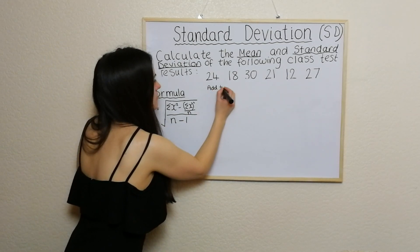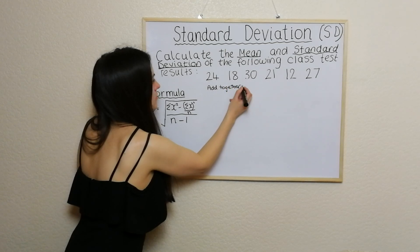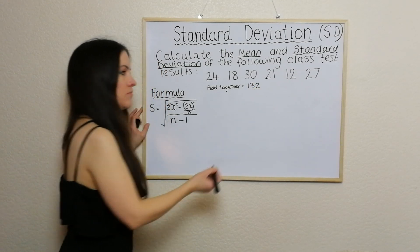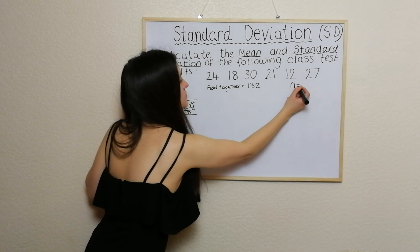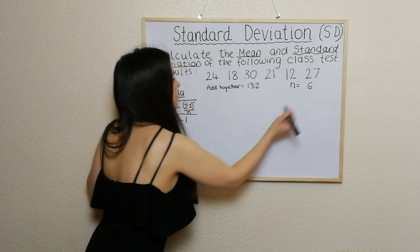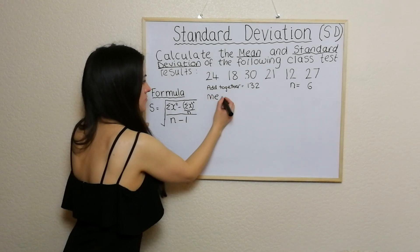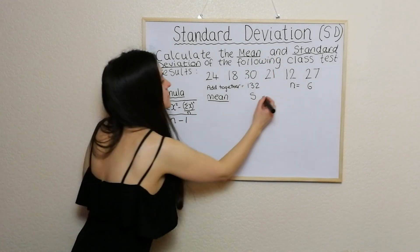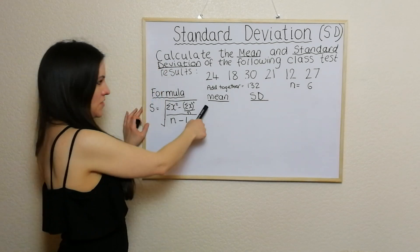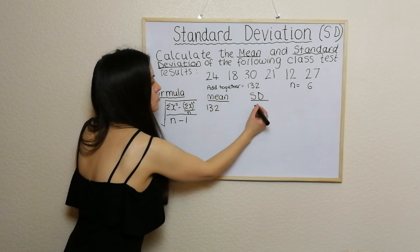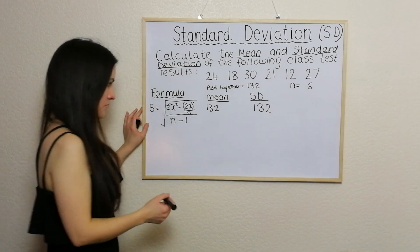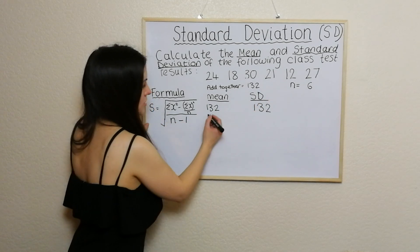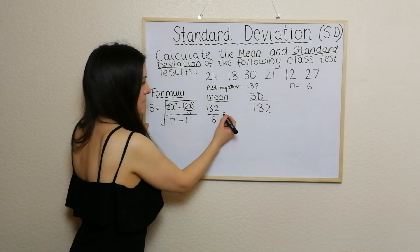The first thing I'm going to do is add them all together. When I add them all together, I get 132. The number of values is 6. So I'm going to write mean and standard deviation — I'll just call it SD for short. In the mean column, I write 132 divided by 6, which gives me 22.